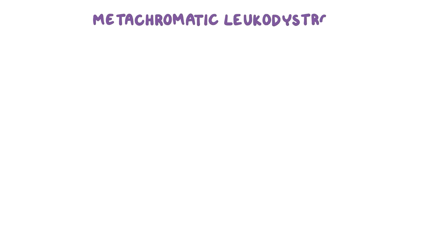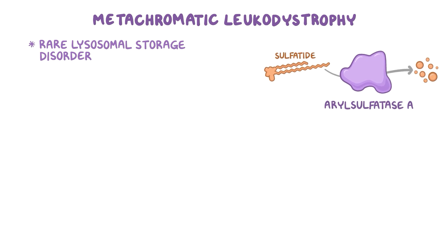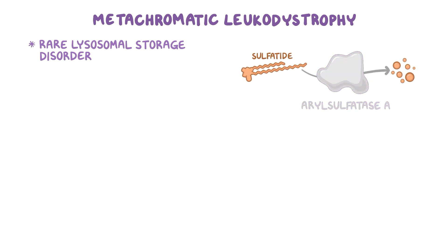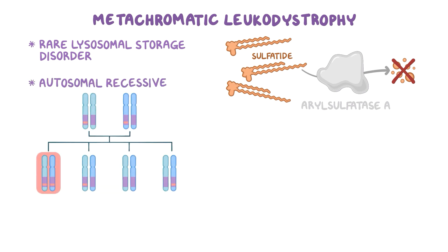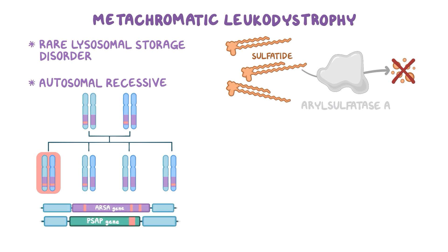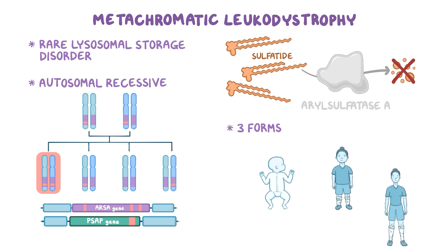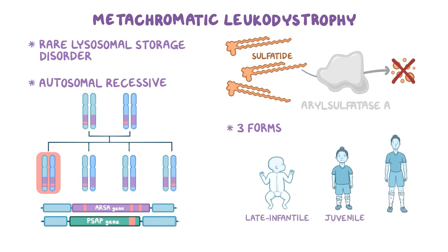As a quick recap: metachromatic leukodystrophy, or MLD, is a lysosomal storage disorder characterized by accumulation of sulfatide due to decreased activity of the enzyme arylsulfatase A. It's an autosomal recessive disorder caused by a mutation in the ARSA gene or PSAP gene. There are three forms of MLD based on the age at onset of symptoms: late infantile form, juvenile form, and adult form.